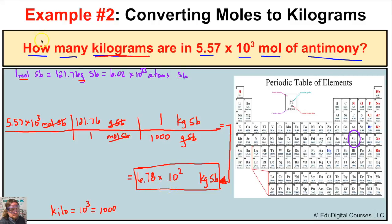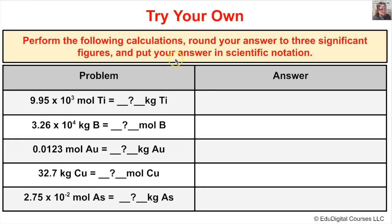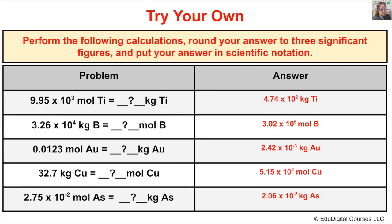Now let's take a look at a few more problems you can try on your own. Pause the video, get your calculator and periodic table, and perform the following five calculations — round your answer to three significant figures and put your answer in scientific notation. I'll give you the answers in five, four, three, two, one — here you go. If you got them all right, you know what you're doing! Click the button in the bottom right corner to subscribe to my channel, and feel free to leave comments or questions below.